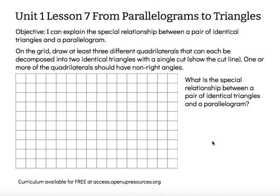On the grid, draw at least three different quadrilaterals that can each be decomposed into two identical triangles with a single cut. Show the cut line. One or more of the quadrilaterals should have non-right angles.